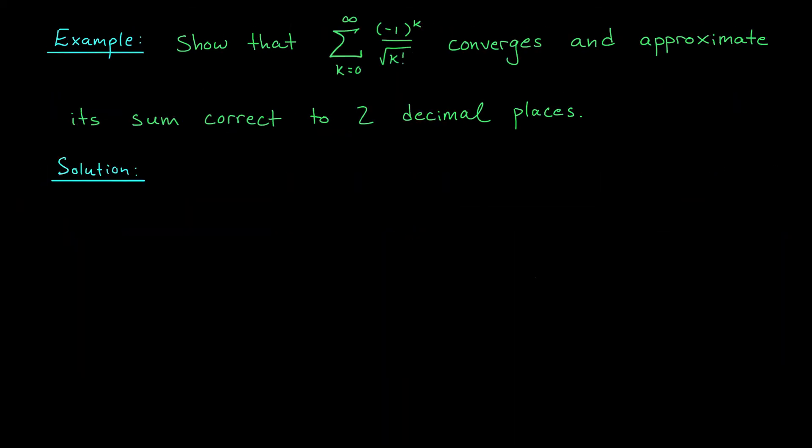I'd like to end this video with a more substantial example involving the estimation theorem, where we're first going to show that this series, the sum from k equals 0 to infinity, of minus 1 to the k over the square root of k factorial converges. Then we're going to approximate its sum correct to at least two decimal places. That is, we're going to approximate the sum with an error that's less than 10 to the minus 2.